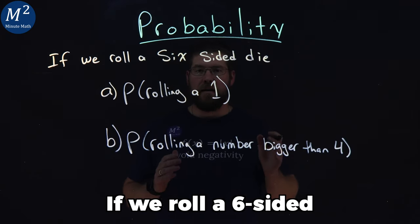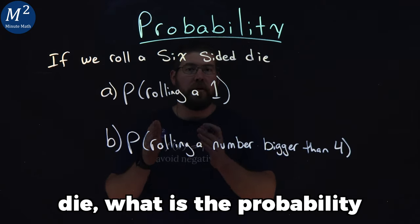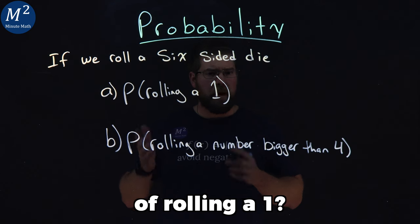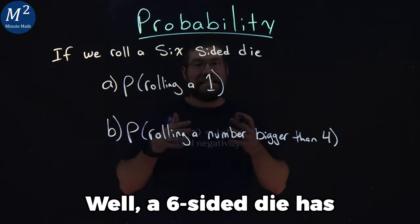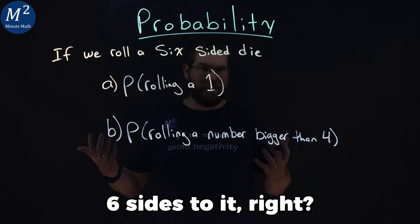If we roll a six-sided die, what is the probability of rolling a one? Well, a six-sided die has six sides to it, right?